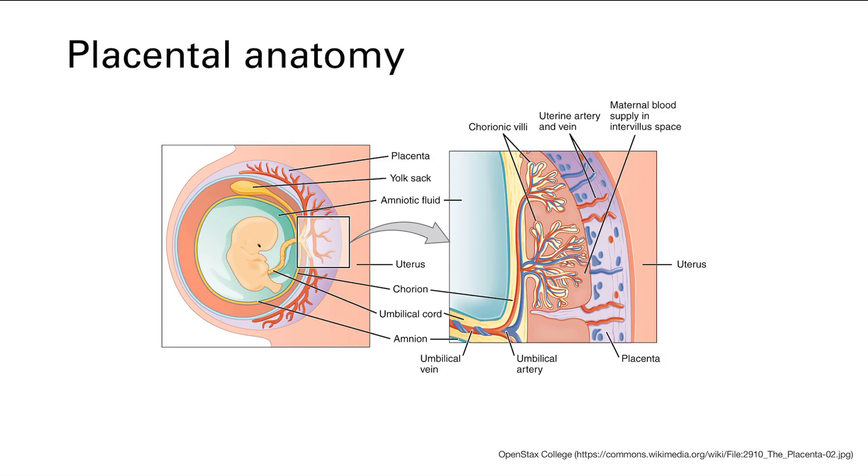And this placenta is going to grow continuously throughout the pregnancy and it's going to grow bigger and bigger. So let's take a closer look at the placenta, and first we'll look at the baby. You see its umbilical cord, which is what connects to the placenta, and that's how it gets all that nutrients and oxygen and gets rid of all that waste.